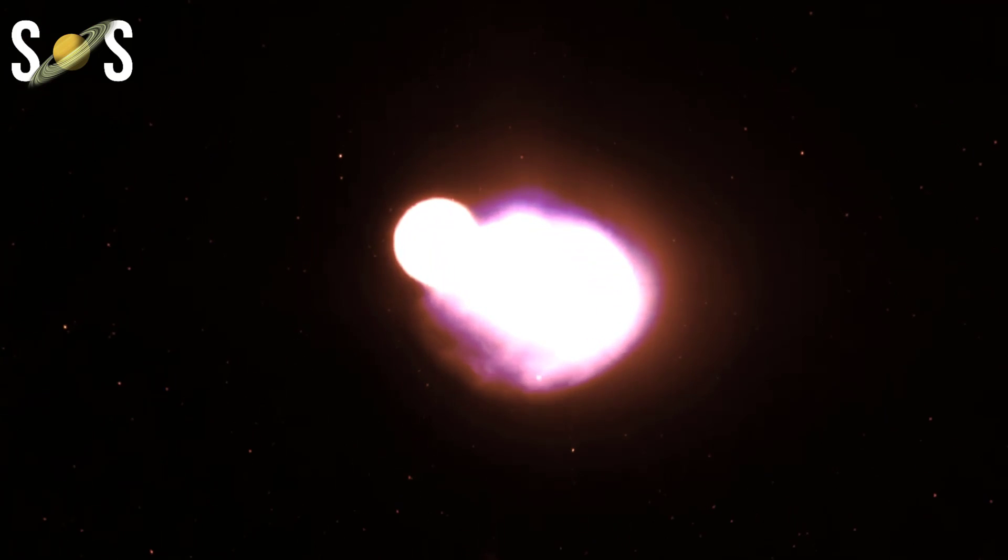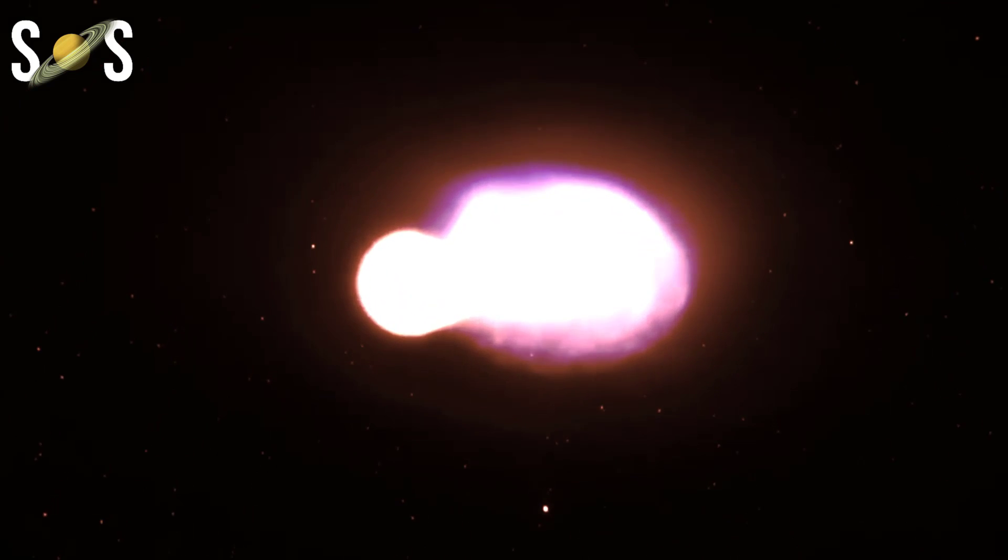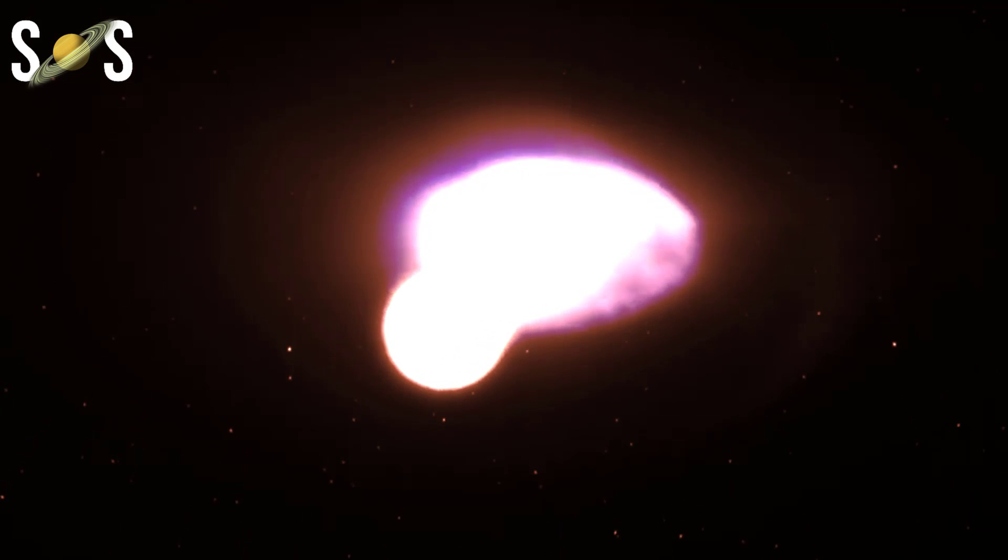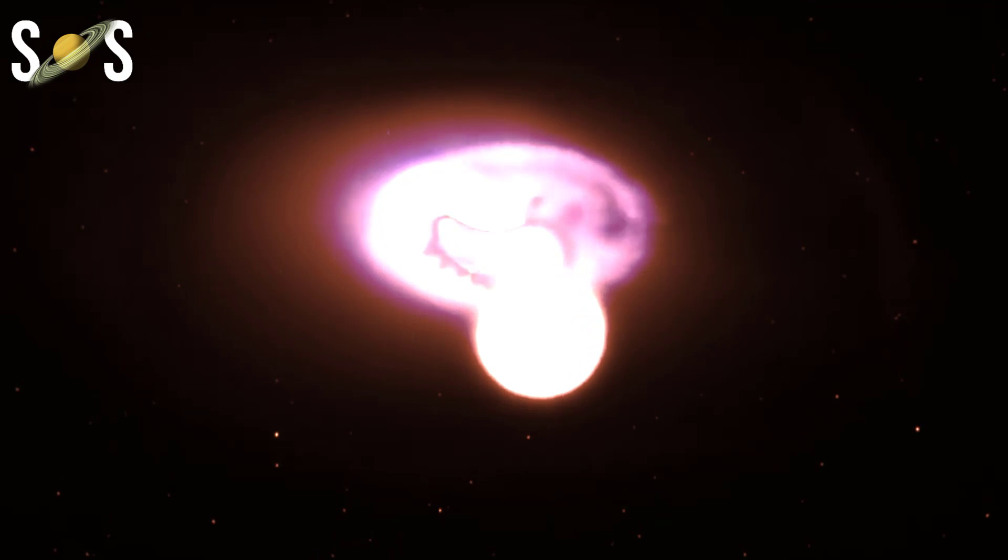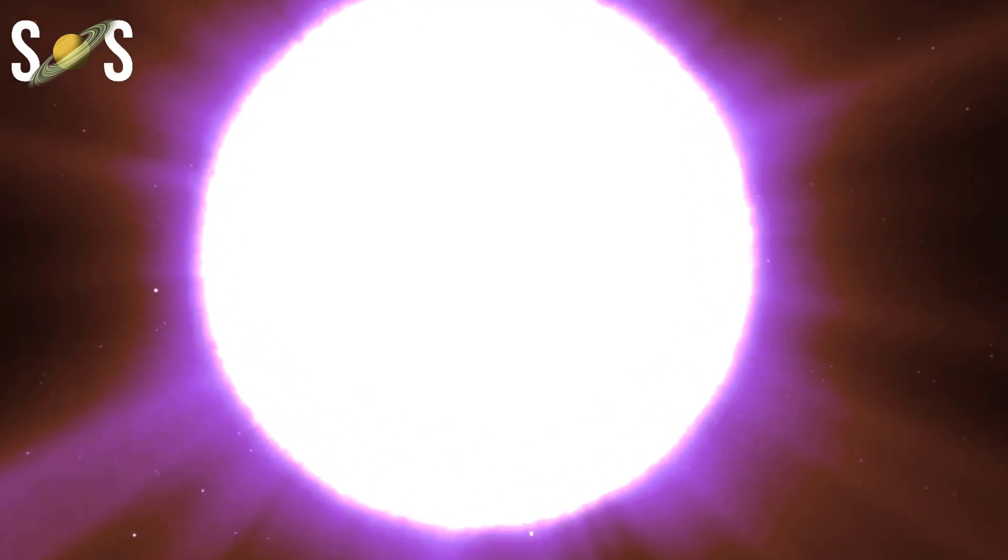Before they go out in a blaze of glory, some stars experience violent eruptions or release glowing hot layers of gas. Until astronomers witnessed this event, they believed that red supergiants were relatively quiet before exploding into a supernova or collapsing into a dense neutron star.